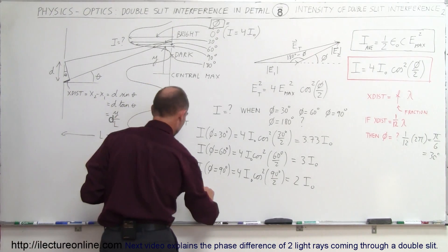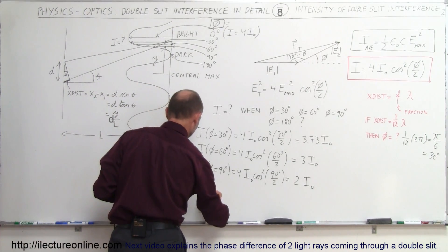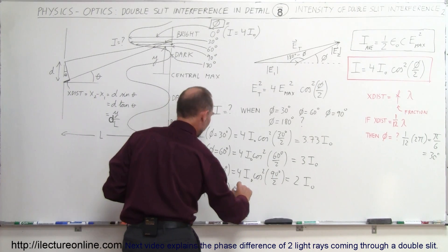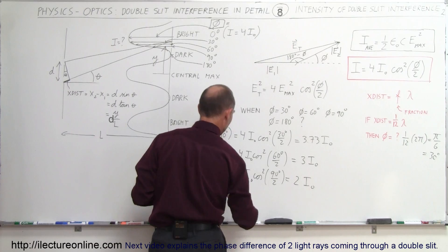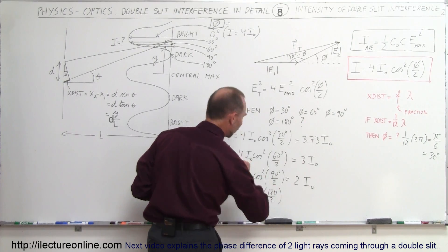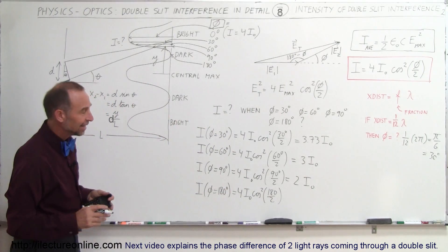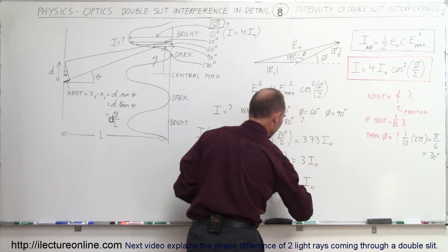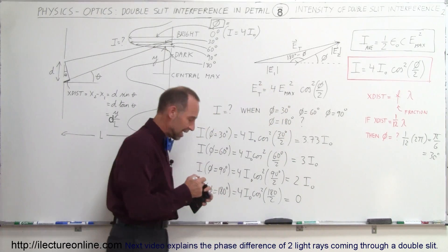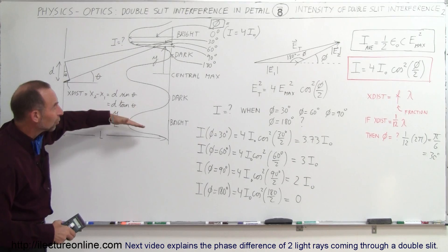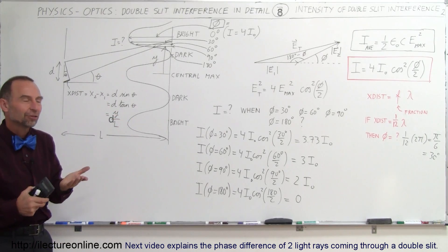At 180 degrees, the intensity is 4 times the intensity of each individual beam times the cosine squared of 180 divided by 2. That's the cosine squared of 90, and the cosine of 90 is 0, so the intensity at that point is 0 — that's where you see a dark spot. That's how you find the intensity anywhere along the screen if you know the phase difference.